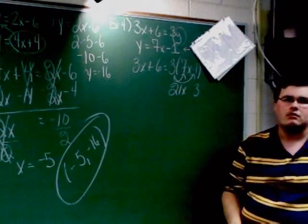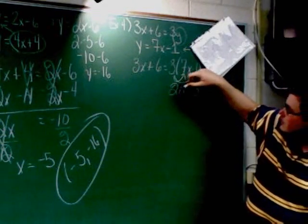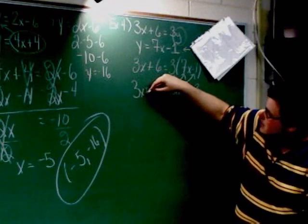And what sign goes in the middle? Subtraction. Good. This here was subtraction. That's why it's subtraction there. Still got 3x plus 6 out here.